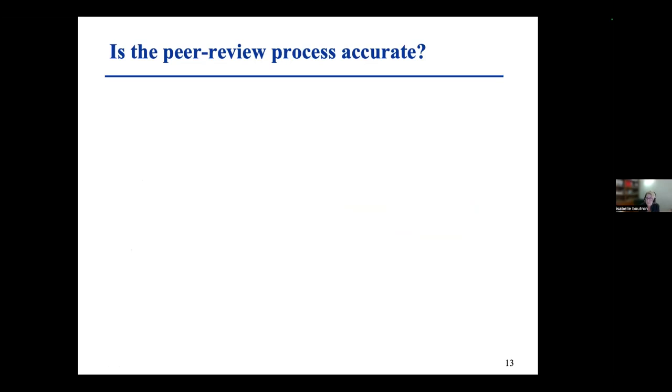Overall, these results are quite disappointing. For key elements where we would like peer reviewers to be active — improving transparency, avoiding selective reporting of outcomes, and avoiding SPIN — our results showed that the peer review process did not have a huge impact.